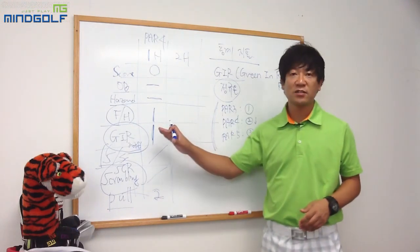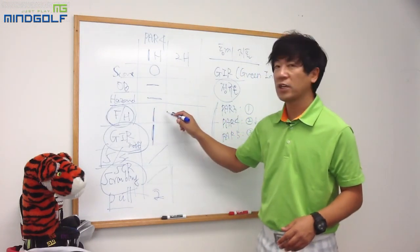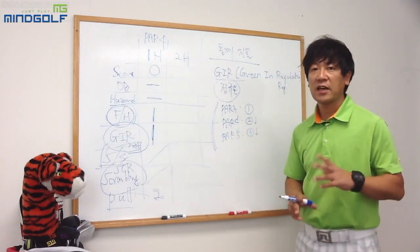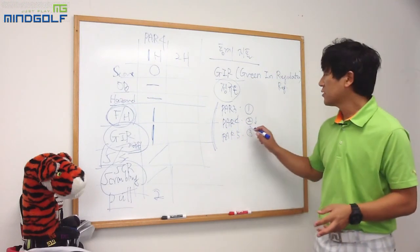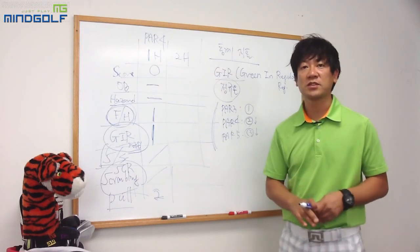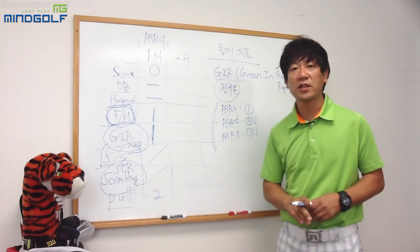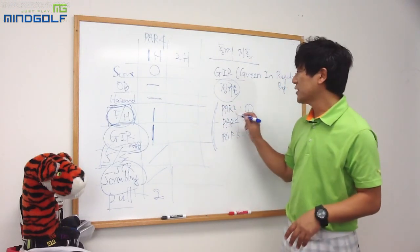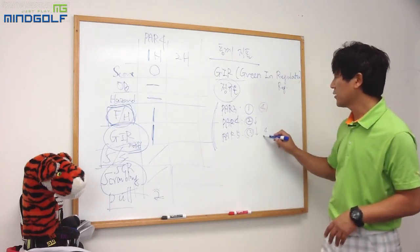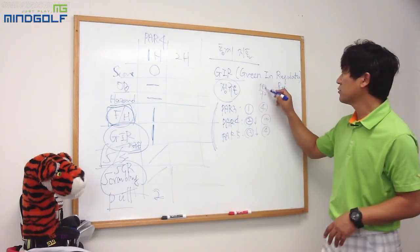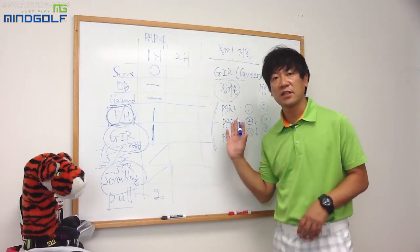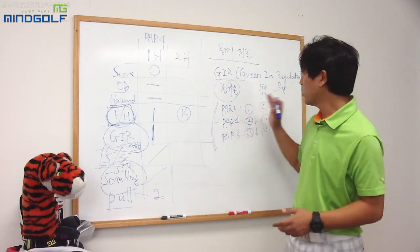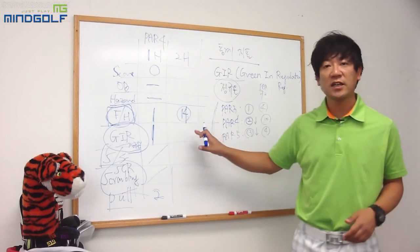참고로 페어웨이 히트는 총 몇 번의 기회가 있을까요? 파3 같은 경우는 페어웨이 히트가 없습니다. 그린을 직접 공략하는 홀이기 때문이죠. 일반적으로 파72홀 기준으로 파3가 4개 있으므로, 페어웨이 히트는 총 14번의 기회가 있습니다. 18개 중 파3 4개를 빼면 14개가 됩니다.